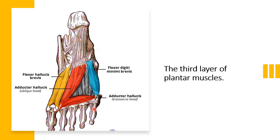Flexor hallucis brevis is located on the medial side. It originates from two places: the plantar surface of the cuboid or lateral cuneiform, and also the tendon of posterior tibialis. It inserts at the base of the proximal phalanx of the great toe. The action is flexion of the proximal phalanx of the great toe at the metatarsophalangeal joint. Innervation is the medial plantar nerve.